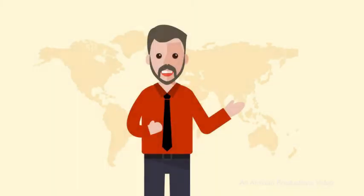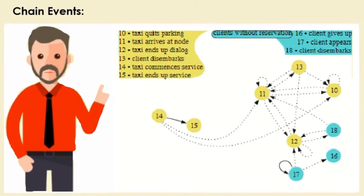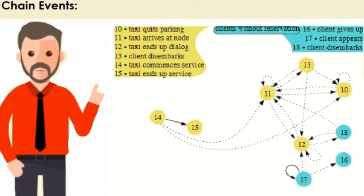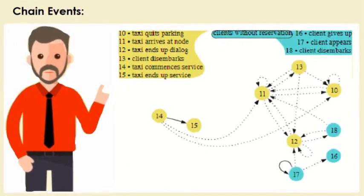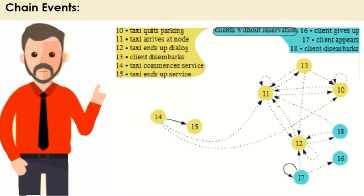In this part, I will show you the chain events of a taxi service by discrete event simulation. Chain of events: the treatment of an event modifies the system state and it may be associated with a generation of new future events which are then added to the event list.